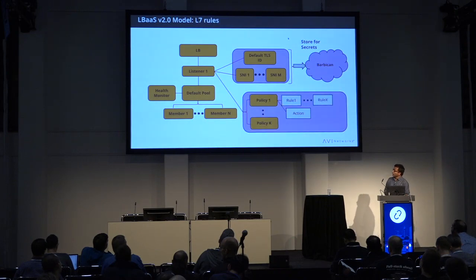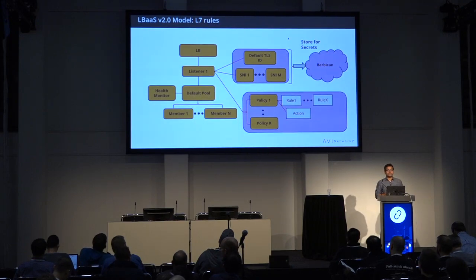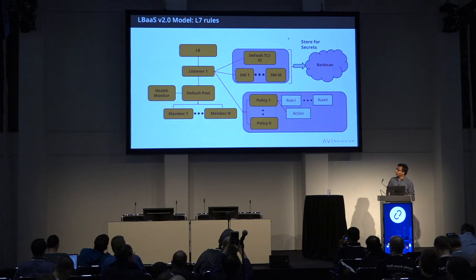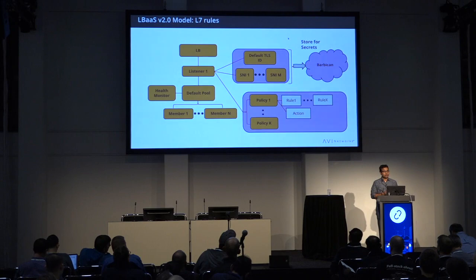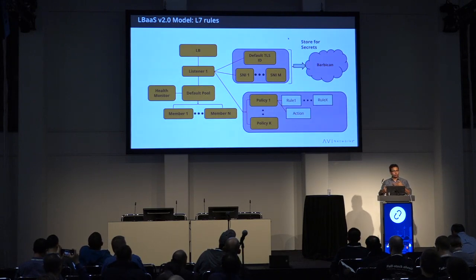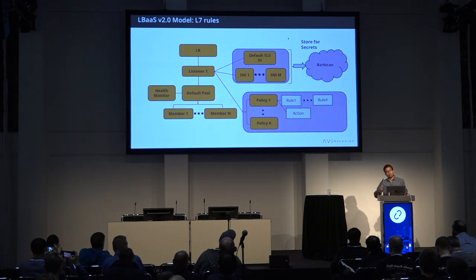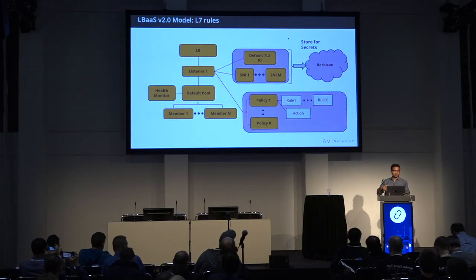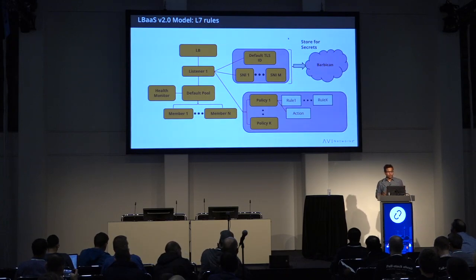Another big enhancement in LBaaS V2 is policy-based load balancing. You have the option to specify multiple policies and associate them with HTTP or HTTPS load balancers. Each policy has a bunch of rules and an action — for example, all HTTP URLs matching certain criteria could have an action of drop, or forward to a specific pool.